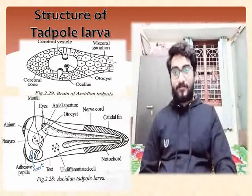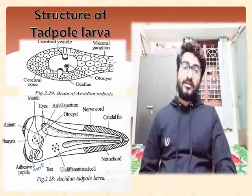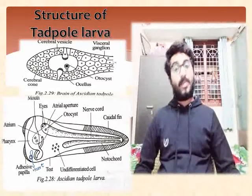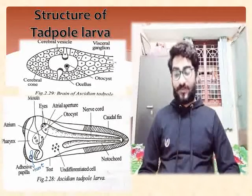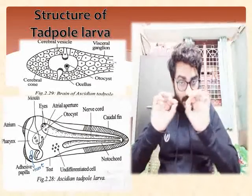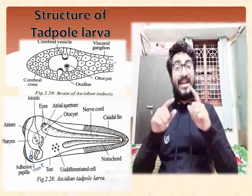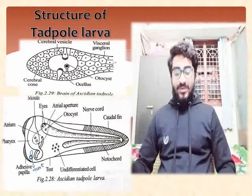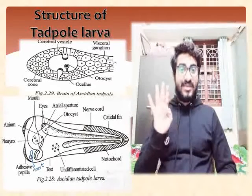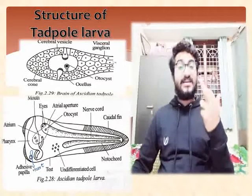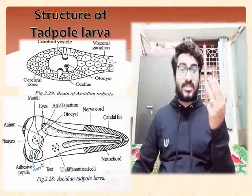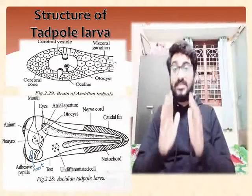The tadpole larvae contains a well-developed alimentary canal composed of mouth, buccal cavity, pharynx, esophagus, stomach, intestine, rectum and anus. The digestive system is straight. All the major parts of the alimentary canal are present in the ascidian tadpole larvae — very microscopic but with remarkable structural detail.